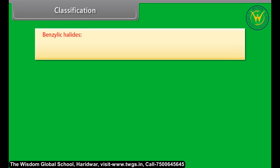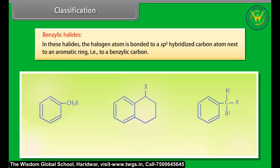In benzylic halides, the halogen atom is bonded to an sp3 hybridized carbon atom next to an aromatic ring — that is, to a benzylic carbon.